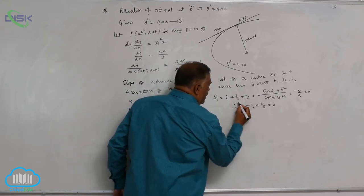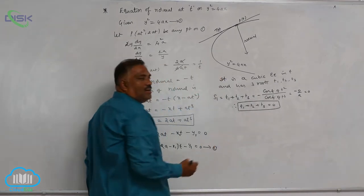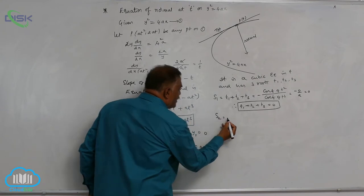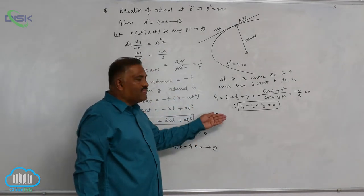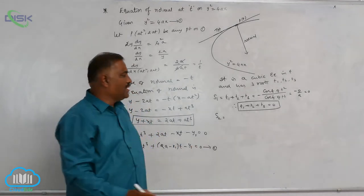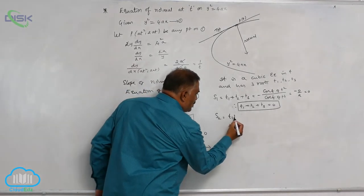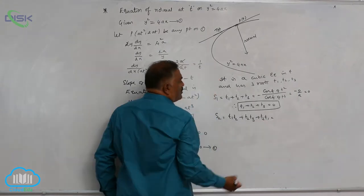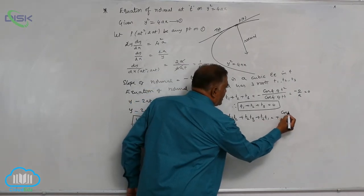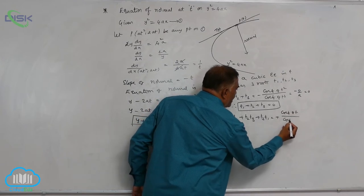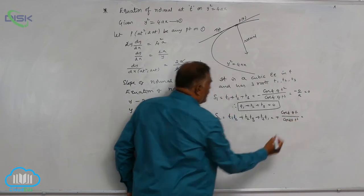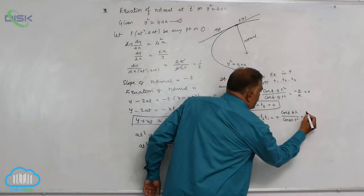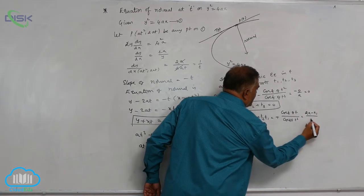This is going to be a key important result in solving objective problems. Next comes s2. The meaning of s2 is sum of the roots taken two at a time. That is t1t2 plus t2t3 plus t3t1 is equal to plus coefficient of t divided by coefficient of t cube. T coefficient is given by 2a minus x1 divided by a.